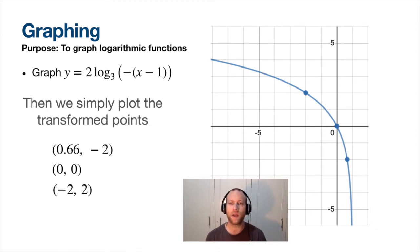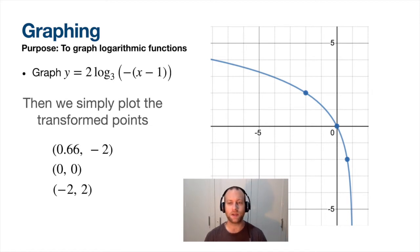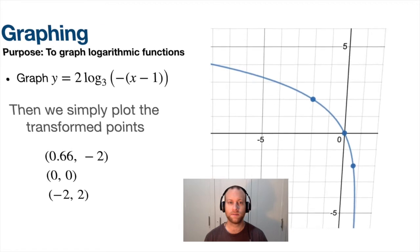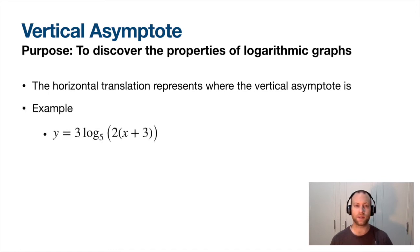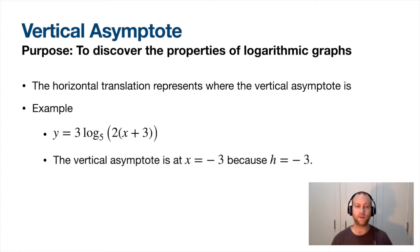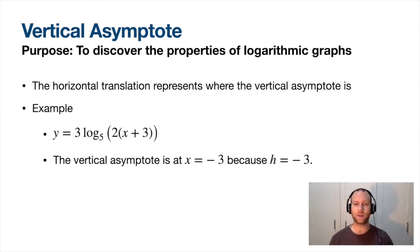Notice where the vertical asymptote is - take a look and see where you'd think it would be. There's something specific to the equation that relates to that. Whatever your horizontal translation is, that is where the vertical asymptote is. For example, if the horizontal translation is 3 to the left, then the vertical asymptote is at x equals negative 3, because h equals negative 3. It's similar to exponential graphs: the k value tells you where the horizontal asymptote is; for logs, how much left or right gives you your vertical asymptote.